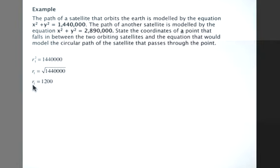So one point that would fall in between these two paths is 1,400 and 0, since we know that 1,200 and 0 would be on the path of the first satellite, and 1,700 and 0 would be on the path of the second satellite.